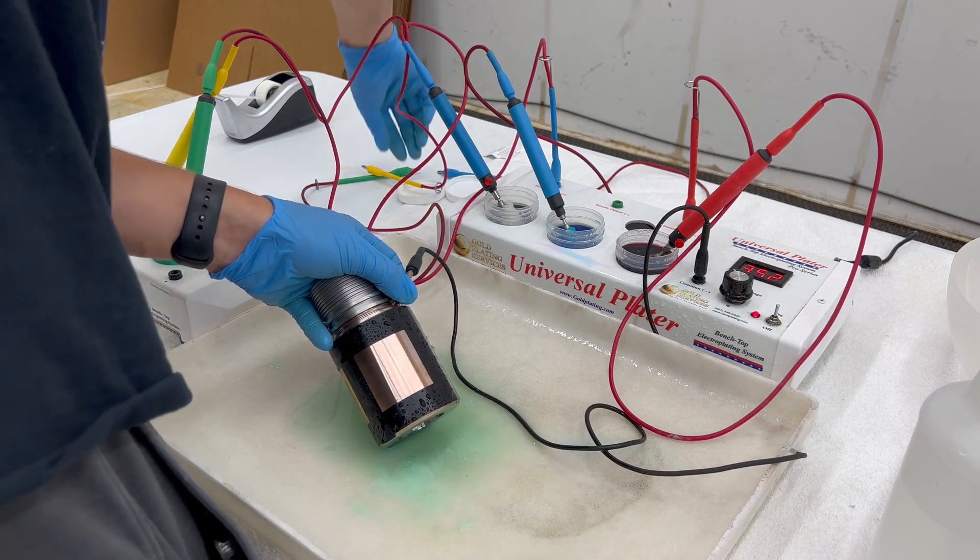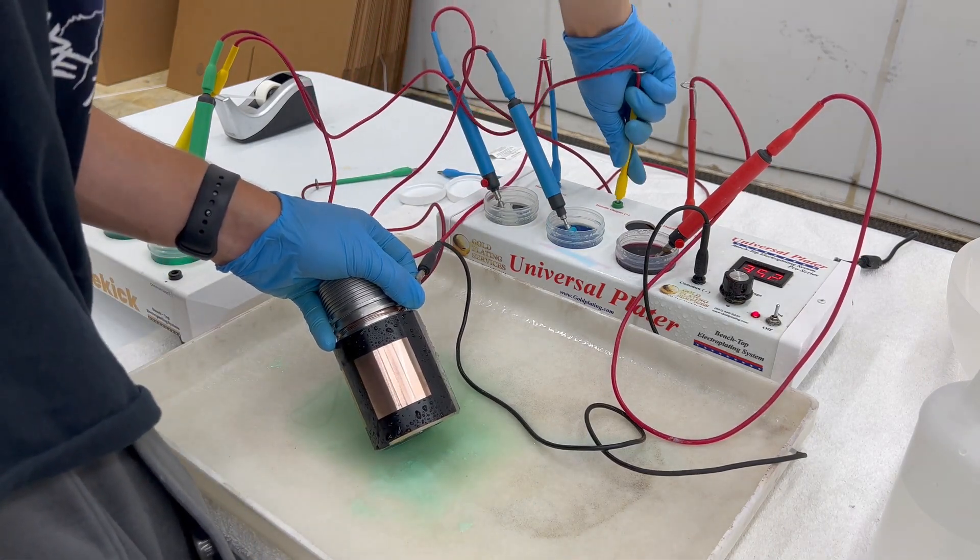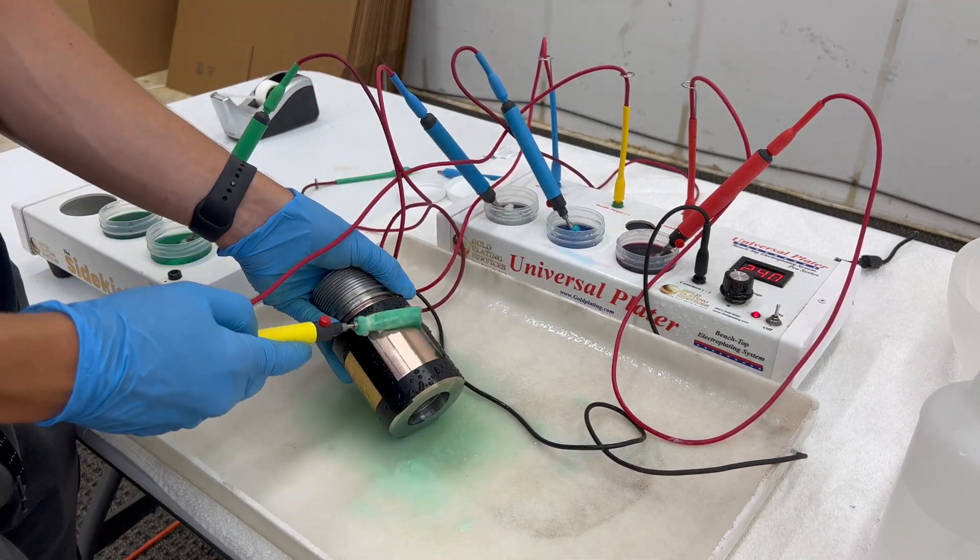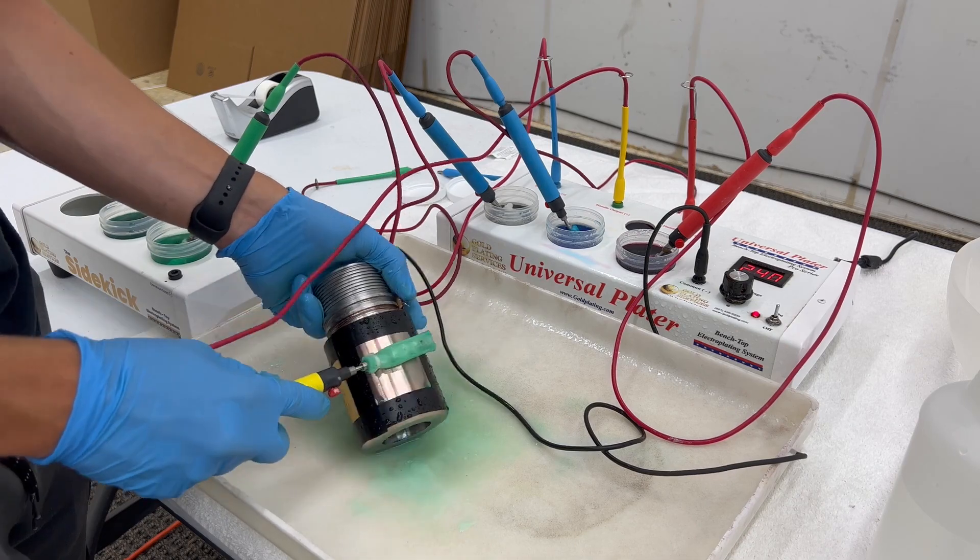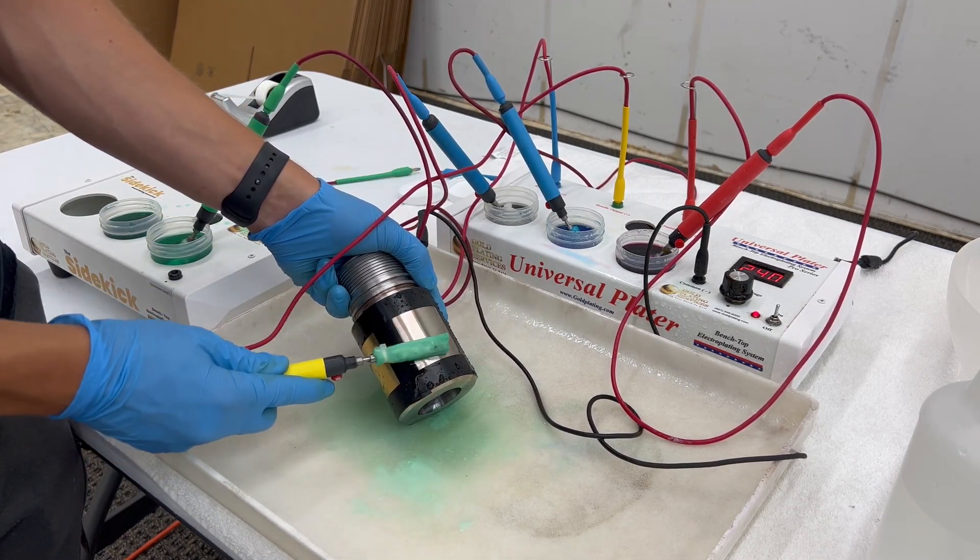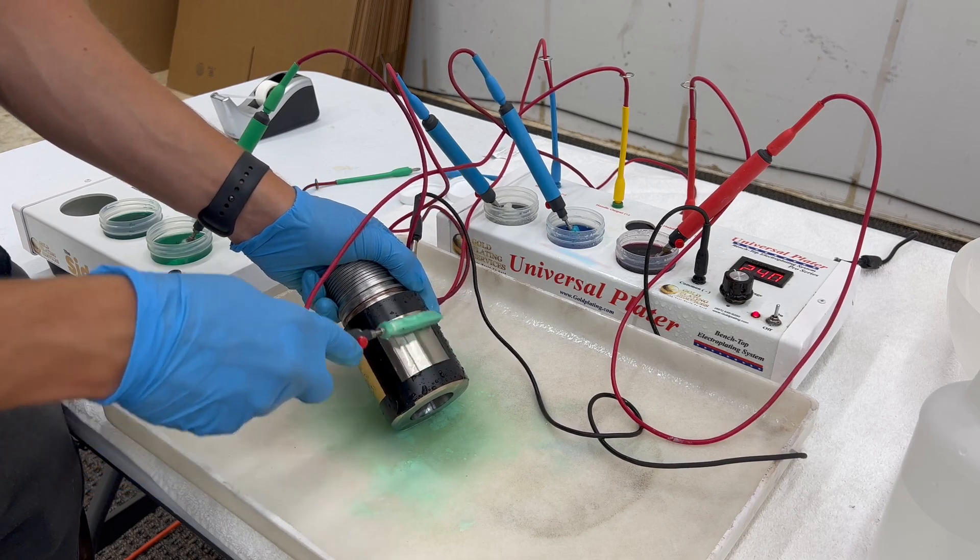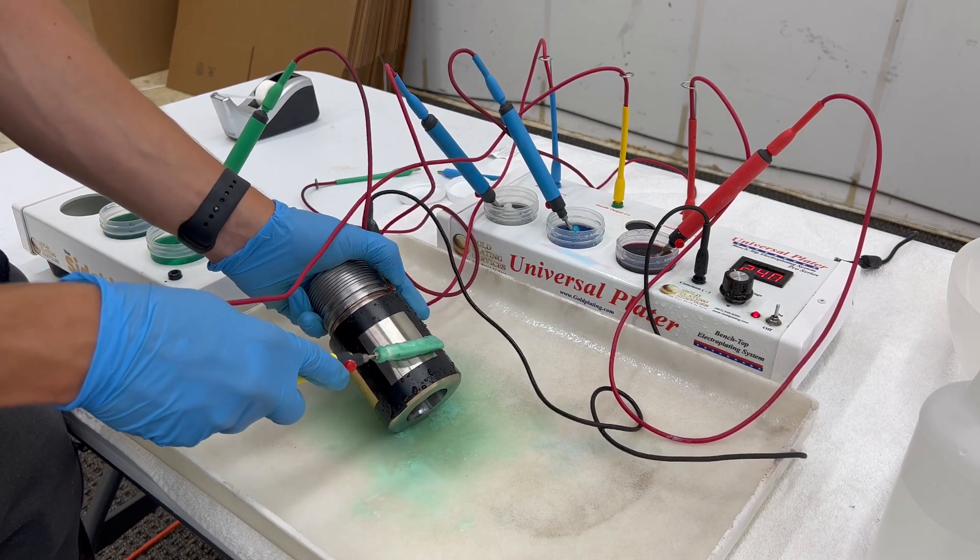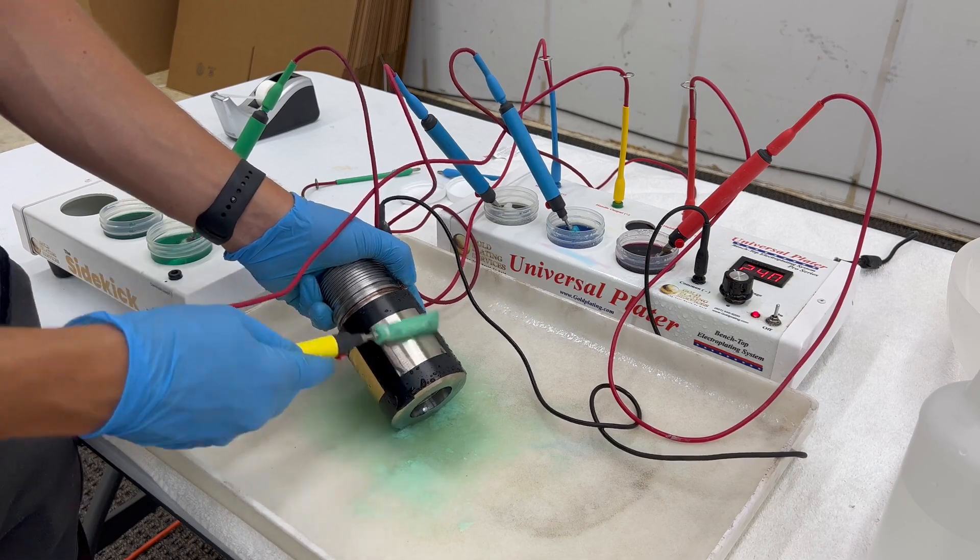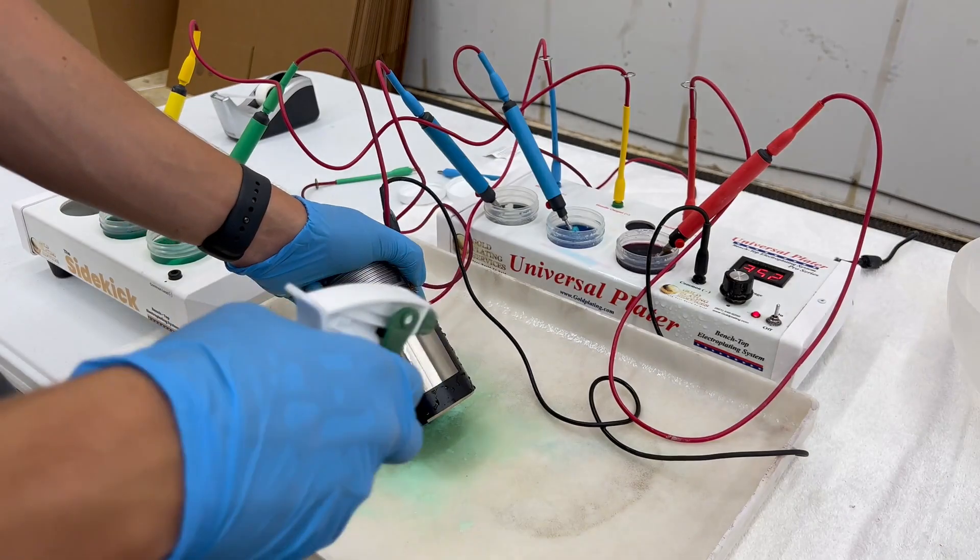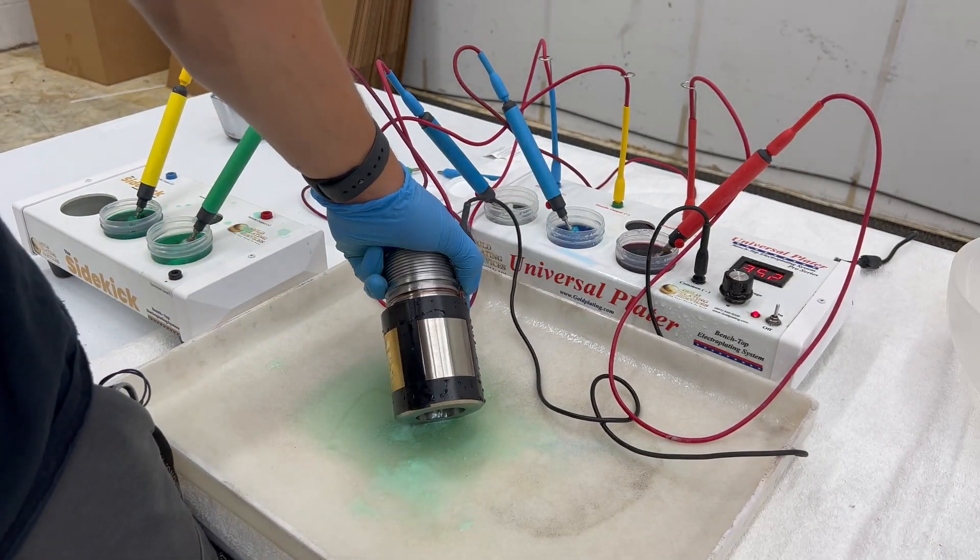I'll rinse it off and we'll switch out our copper strike with our nickel. Put the nickel in and we'll start plating it with the nickel and watch it change. Look at that, all the copper is going away with the nickel because we are plating nickel on top of the copper.